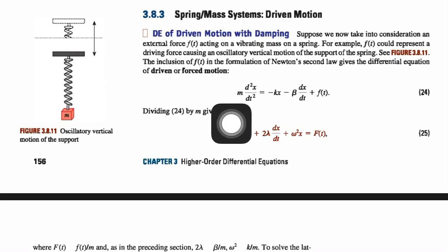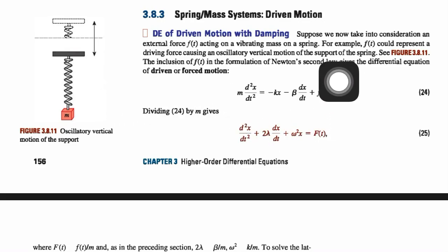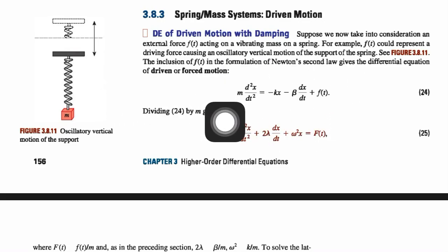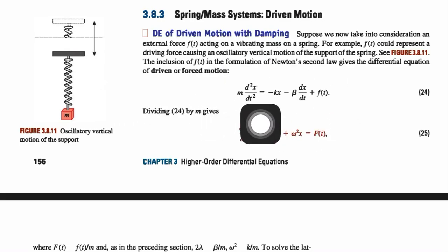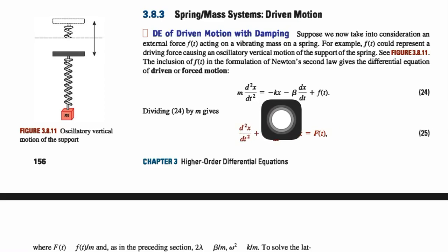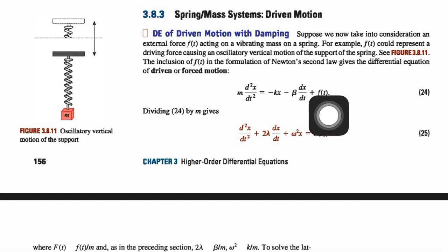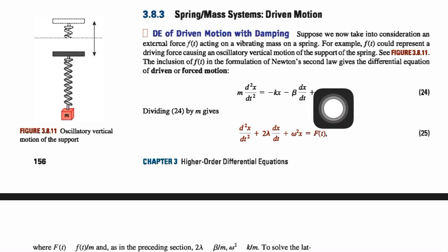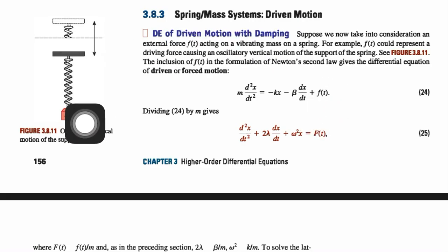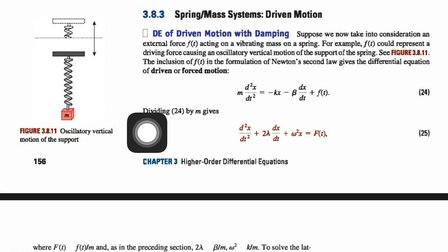The differential equation in that case becomes: m d²x/dt² = −kx − β(dx/dt) + f(t). This is the function — the force applied on that system.